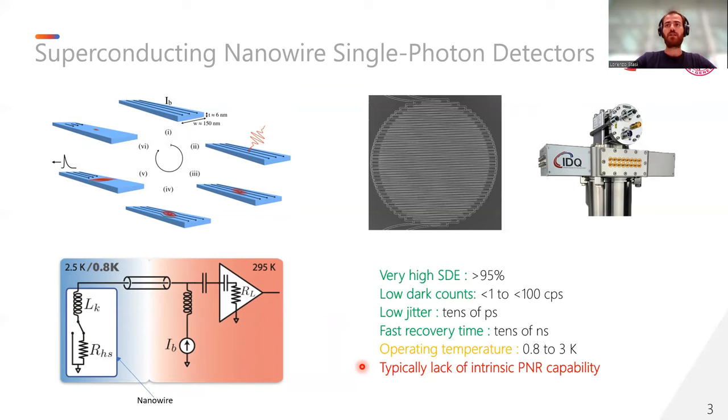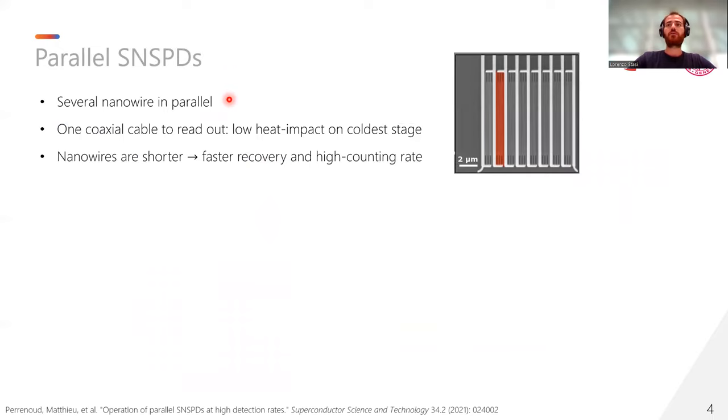Therefore, to achieve a higher degree of resolution, we need to approach a different architecture, which usually consists of multipixel array schemes. One of them can be realized by putting several nanowires in parallel electrical connection. In such a way, only one cable is needed to bias the overall detector, and only one coaxial cable is needed to read out the signal, which strongly reduces the heat impact on the coldest stage of the cryostat. Furthermore, since the parallel detector occupies the same area of a single SNSPD, each nanowire is much shorter, and therefore it allows for faster recovery time and high counting rate.